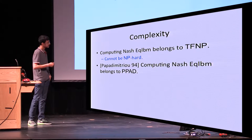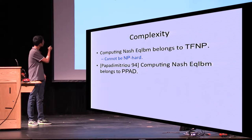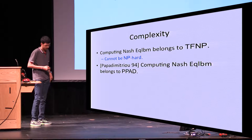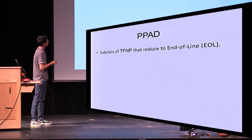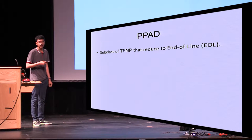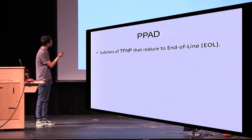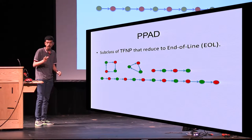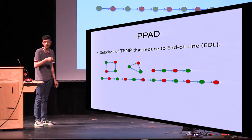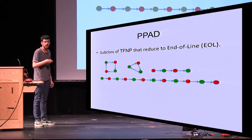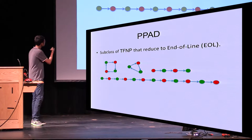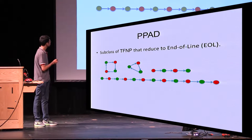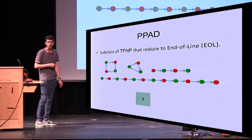An important step in understanding the complexity of finding Nash Equilibrium was taken by Papadimitriou in '94, who showed that it belongs to the complexity class PPAD. PPAD is a subclass of TFNP that reduces to a special problem called End of Line. Let's see what End of Line means. We have a large graph where every node has in-degree as well as out-degree at most one.